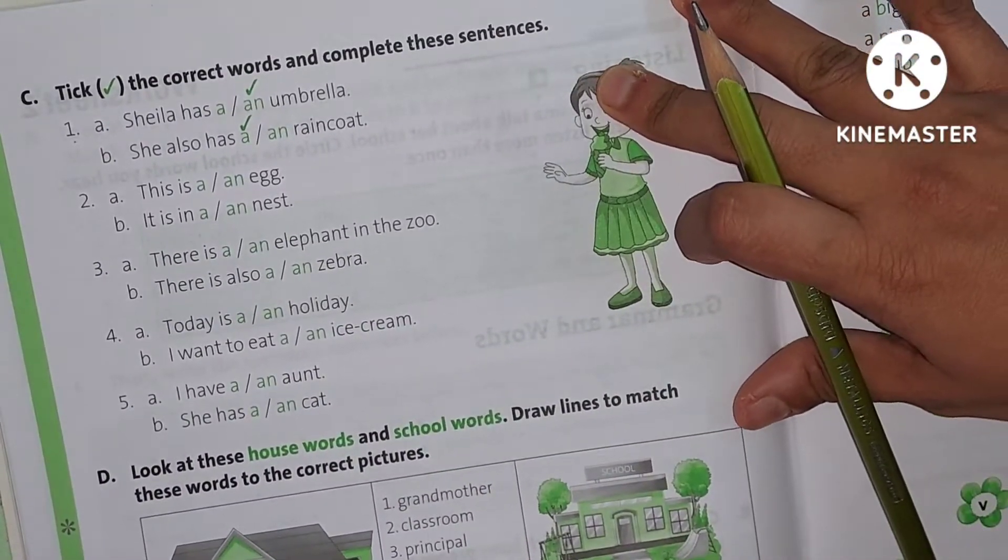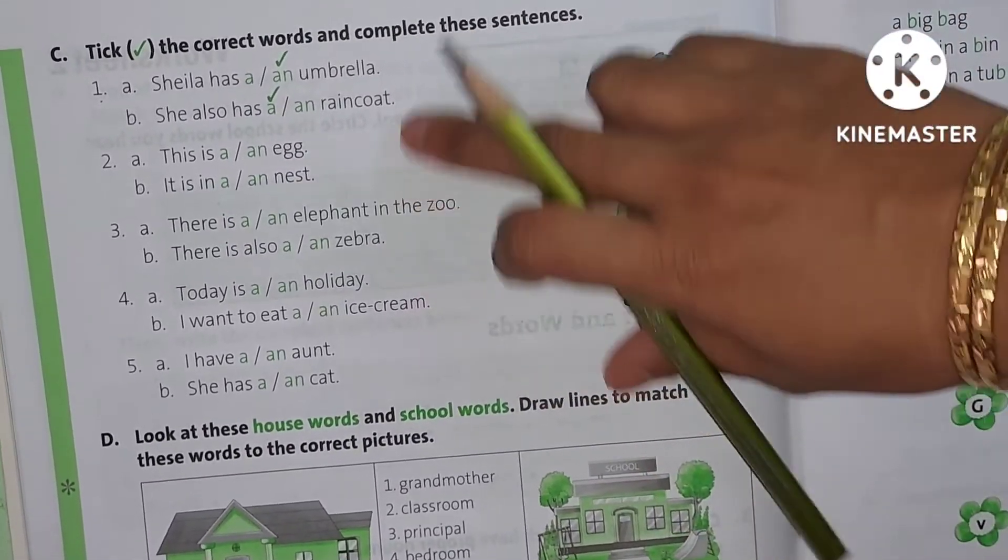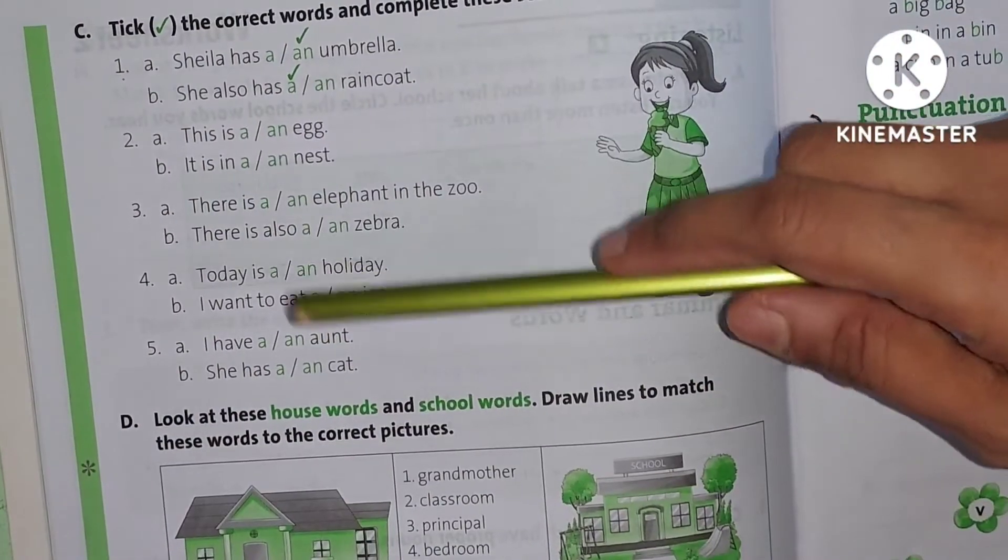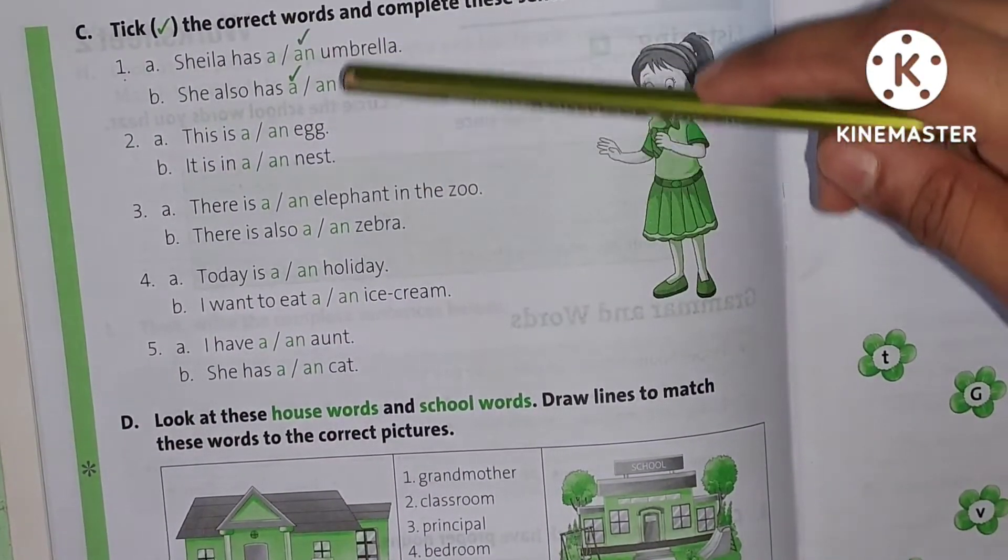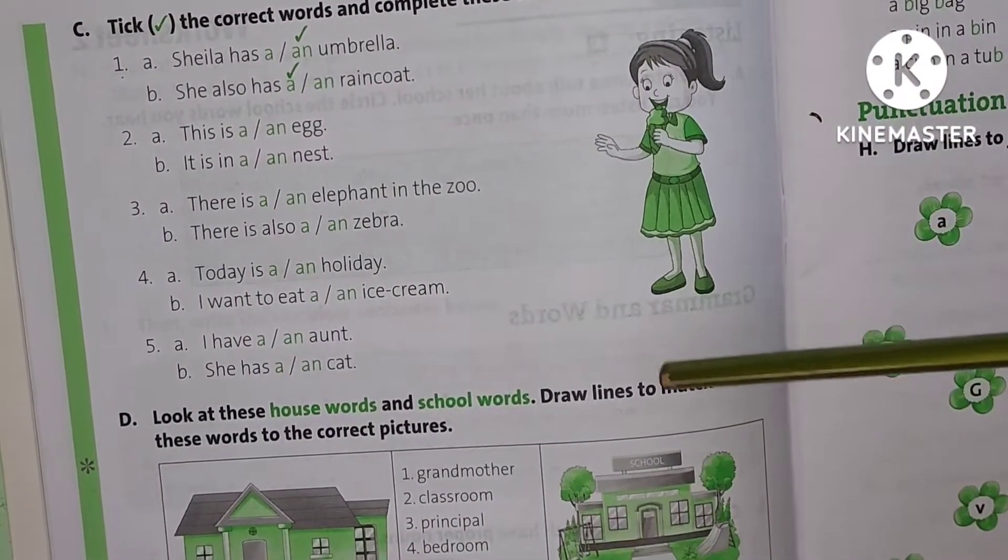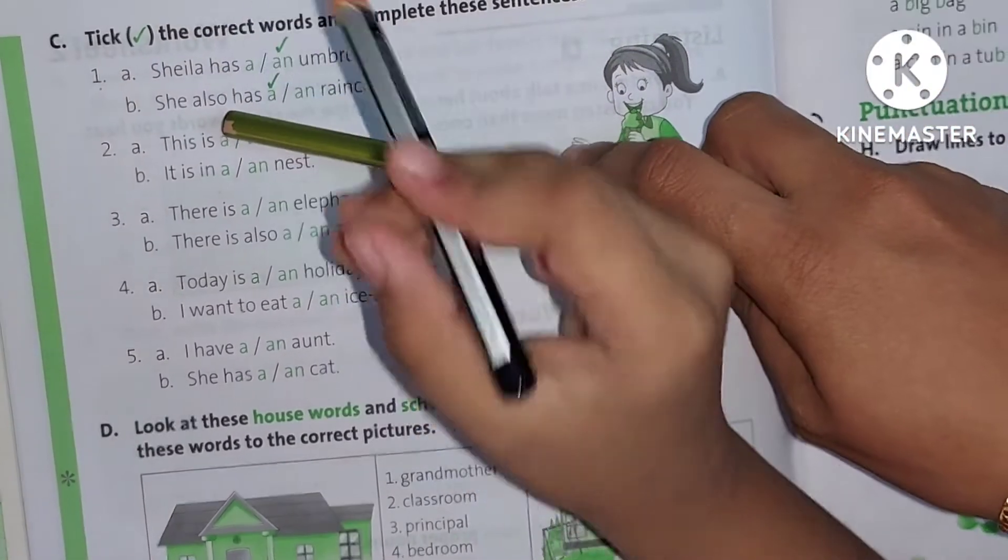Take the correct words and complete these sentences. I will complete these sentences using A and AN. Are you going to complete the sentences with the articles? Yes. So, you will complete them.